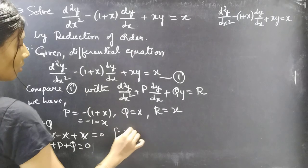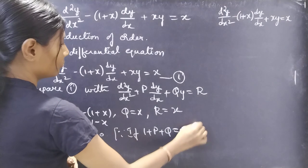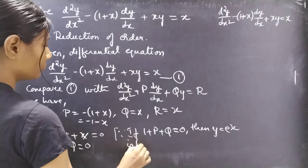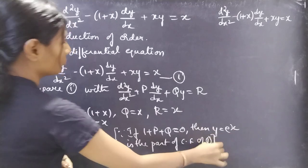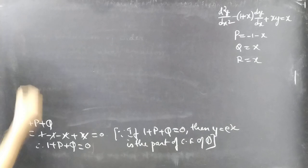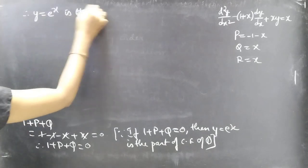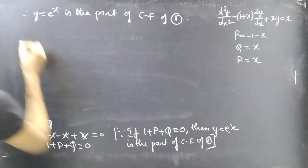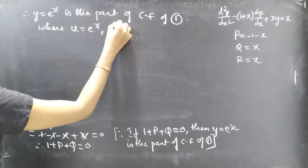Since 1 + P + Q = 0, we know that y = eˣ is a part of the complementary function (CF) of equation 1. Therefore y = eˣ is a part of the CF, where u = eˣ.